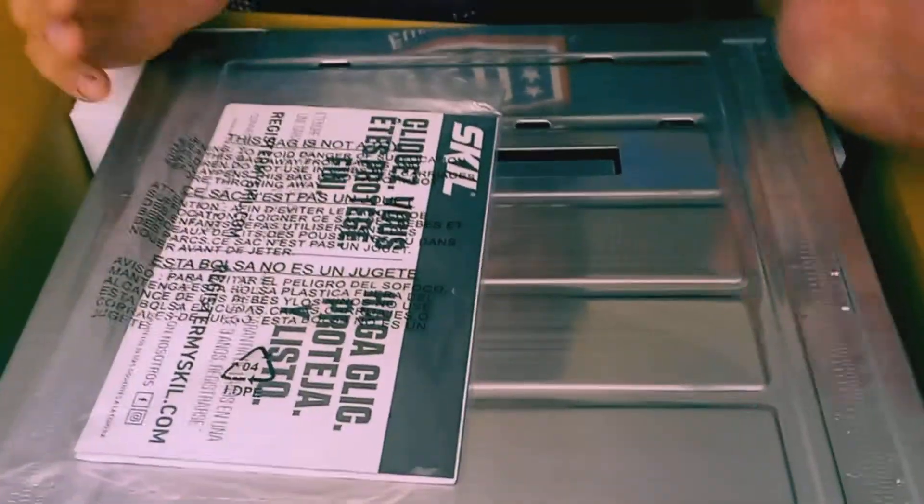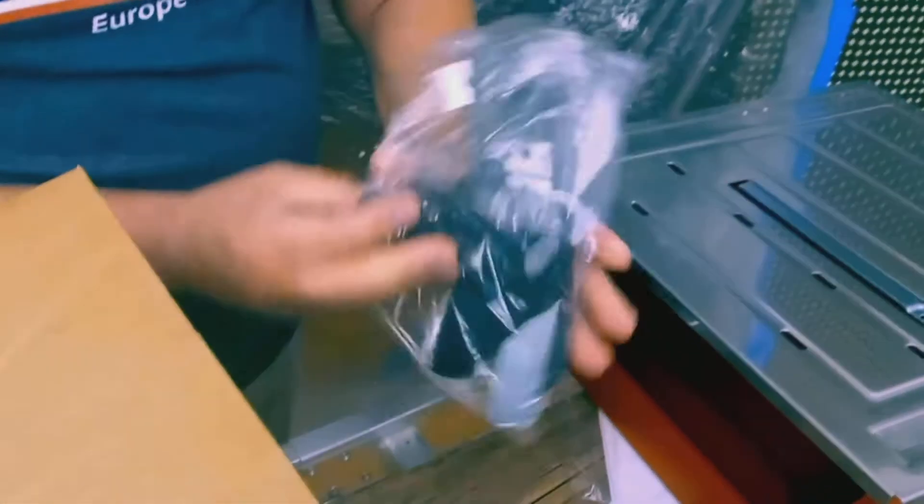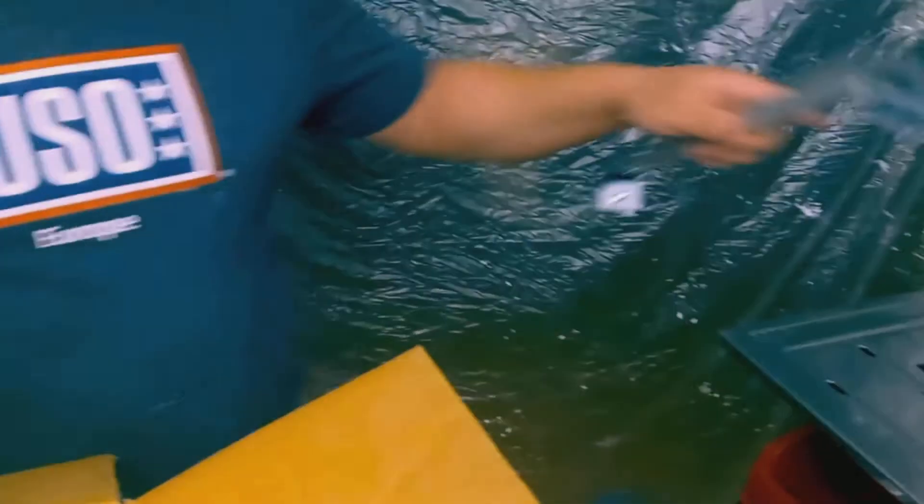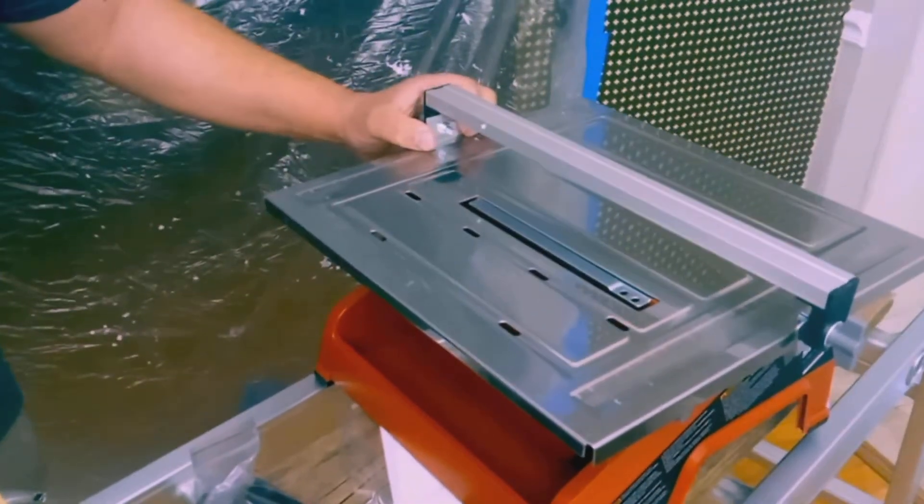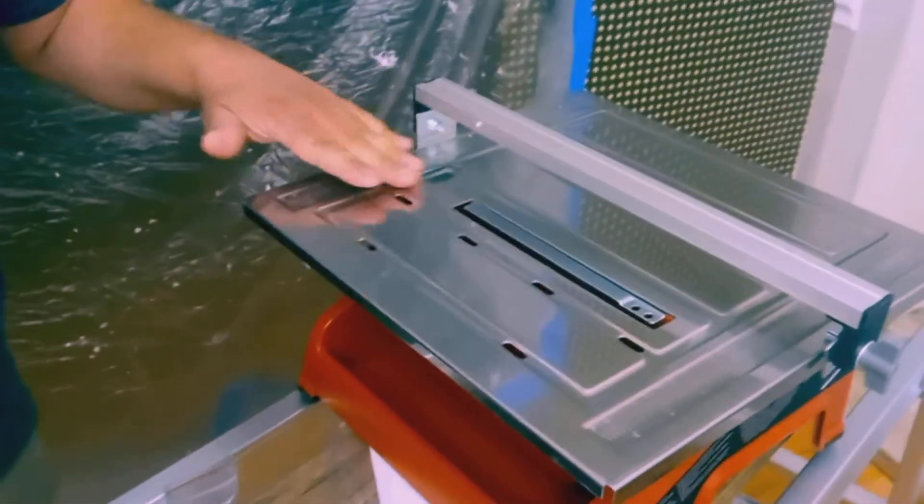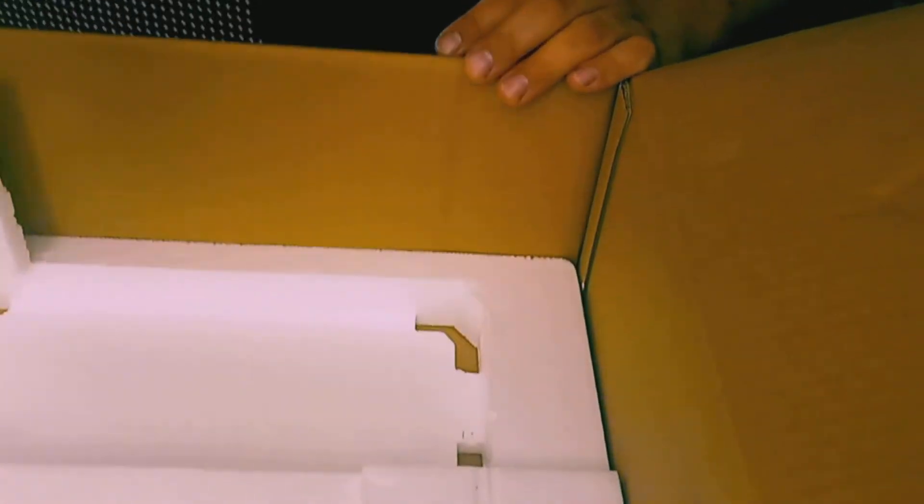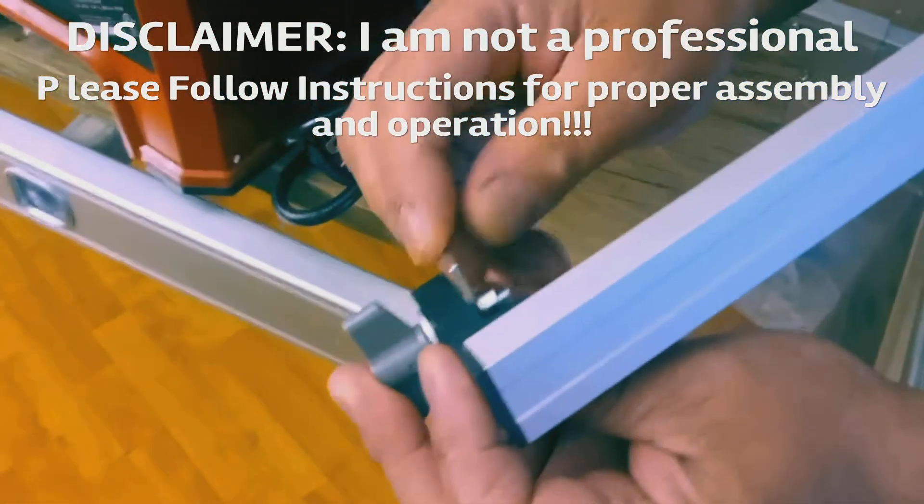Alright so let's see what's in the box. We got our instruction manual. Okay we got our tile cutter. Interesting, looks like this is the guide. Alright we'll see how we use those. Your blade, and I guess the guide as well to line up your tile with the plate that should be right there. And that is it.